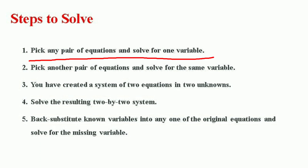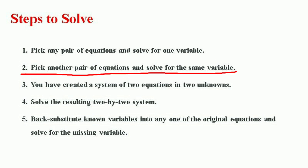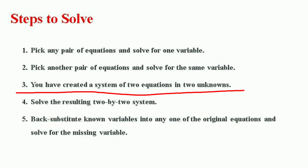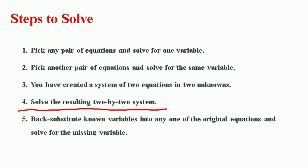Here are the stepwise procedures: First, pick any pair of equations and solve for one variable. Second, pick another pair of equations and solve for the same variable. Through this process you have created a system of two linear equations in two unknowns. Solve the resulting two-by-two system, which was already explained in the last video in detail, and finally back substitute the known variable into any one of the original equations and solve for the missing variables. We will begin with a simple numerical example to illustrate the general method for solving the system of linear equations in three unknowns.